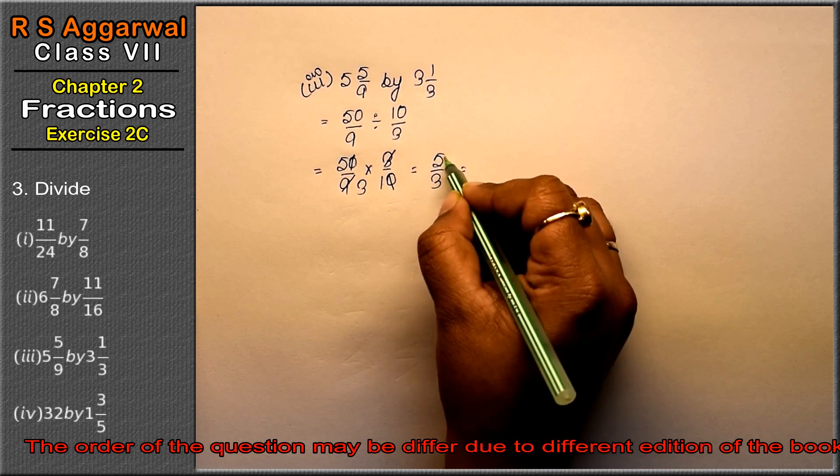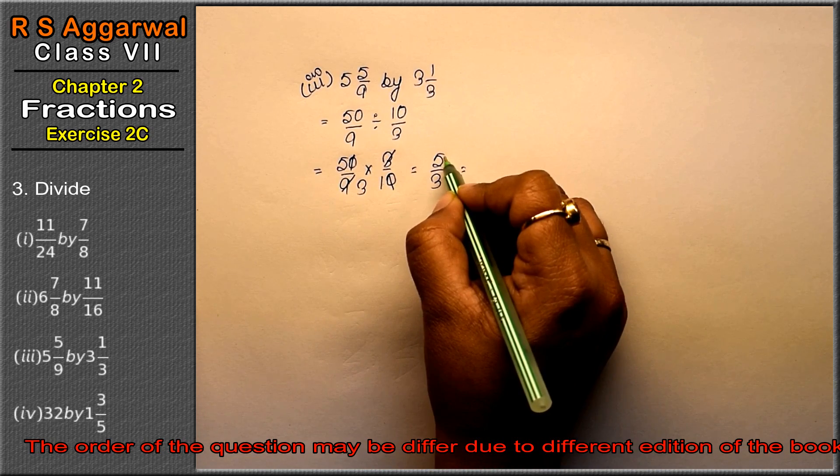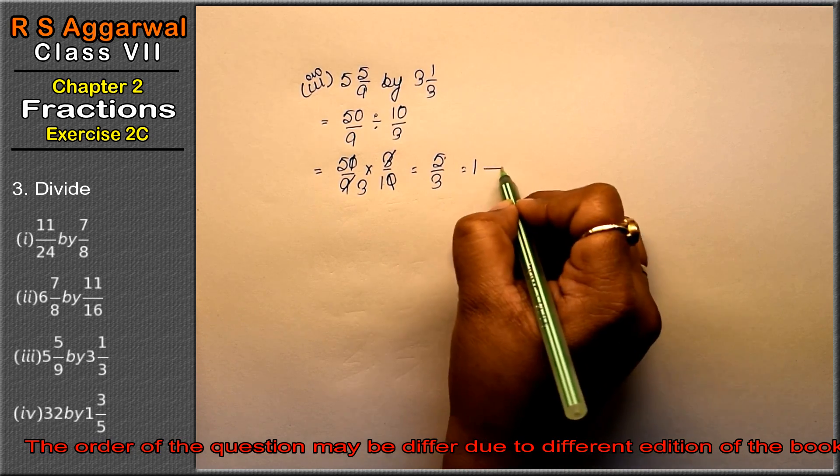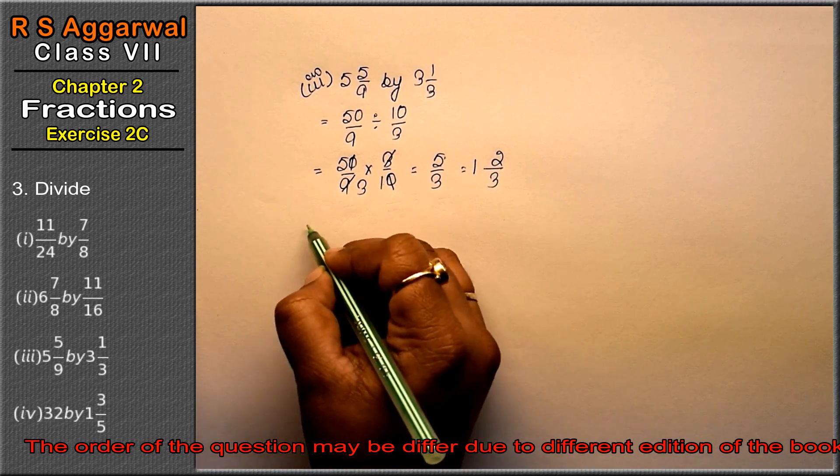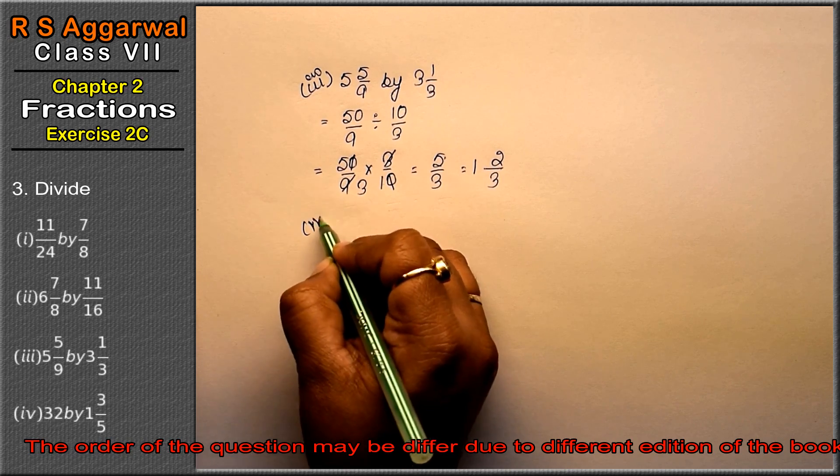Now we will do this in a mixed fraction because the numerator is bigger. 3 times 1 is 3, plus 2 is 5. So 1 whole 2/3. Let's do fourth part.